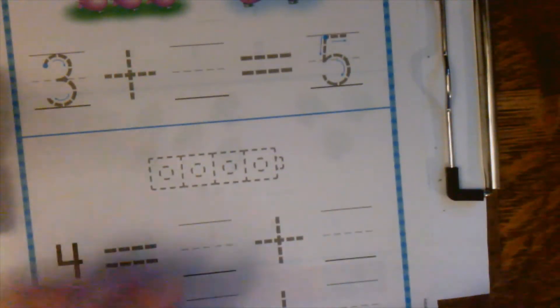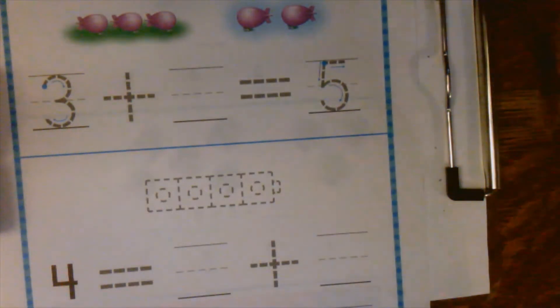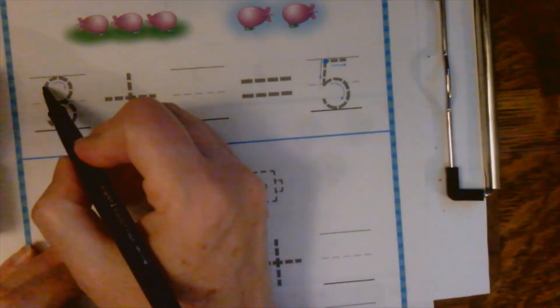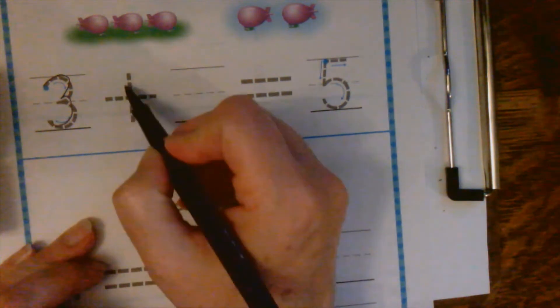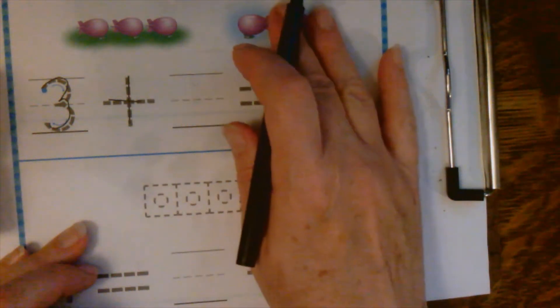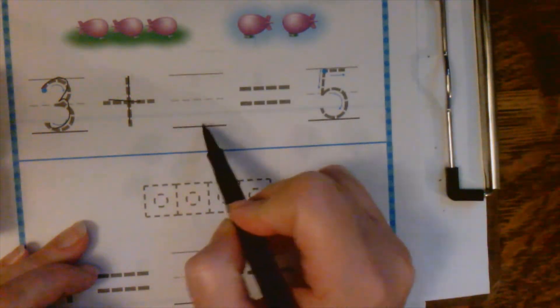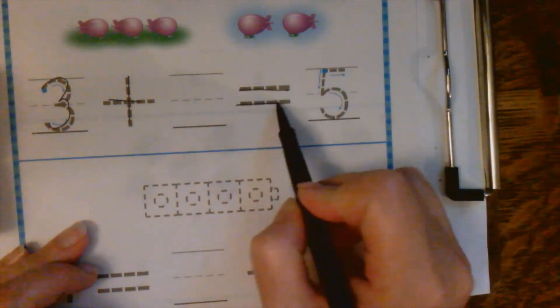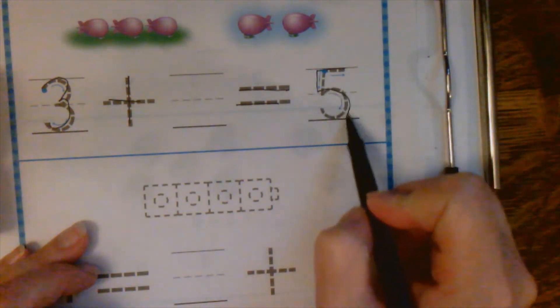Last page already. Here you're not coloring in circles you're actually writing. So we will go ahead to trace these things. Three plus. Here's the three that start out. Some more come. How many more come? Write that number right there. Is the same as five.